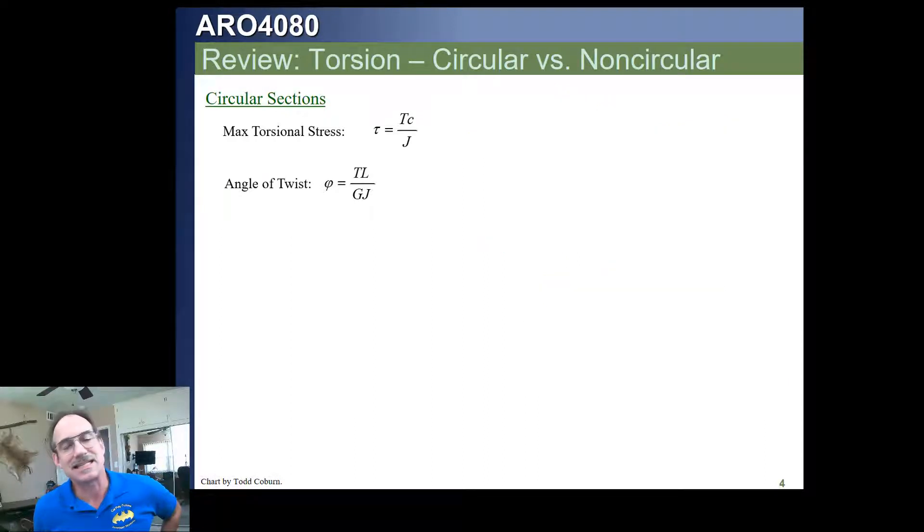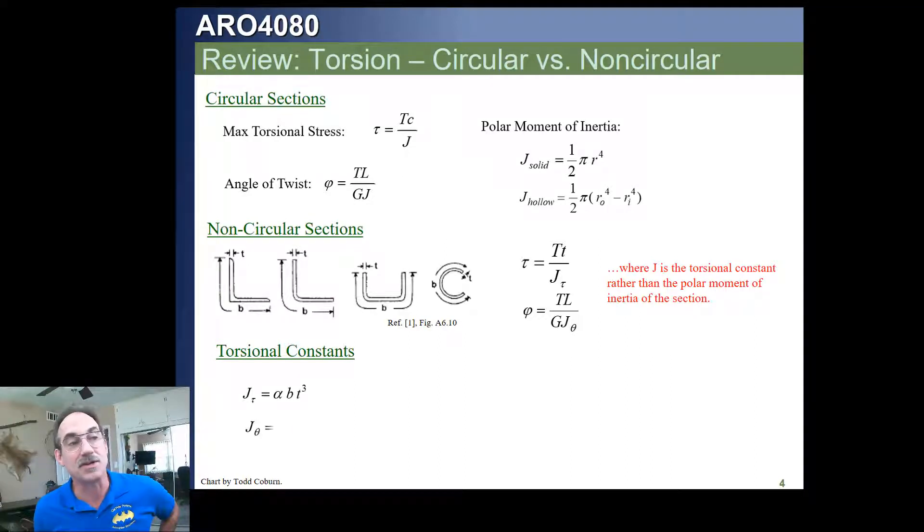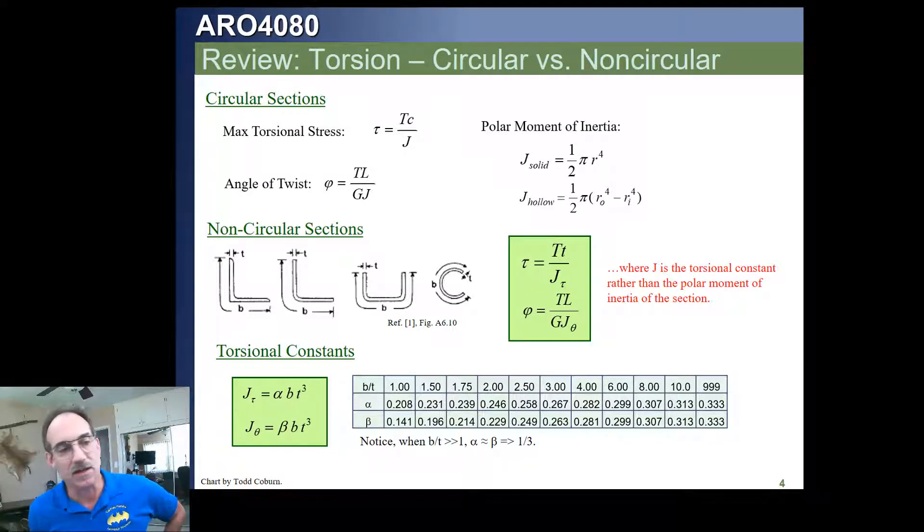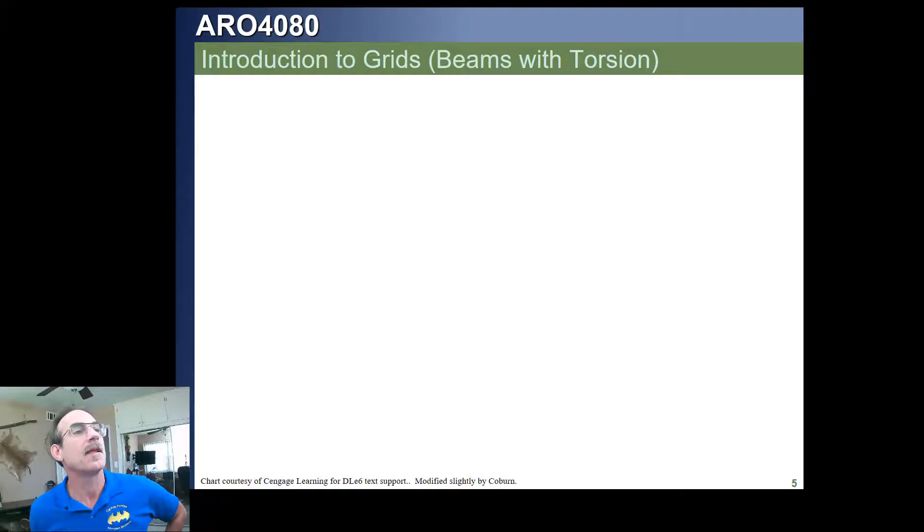Now, with that said, we're going to define this slightly more rigorously. Before we do that, let's refresh our memory on what happens if we have a non-circular section. For a circular section, our torsional constant J happens to be our polar moment of inertia. If we have a non-circular section, we have almost the same form of the equation. We have TT over J for our stresses and TL over GJ for our rotations. In this case, our torsional constant may be different that resists torsional stress versus what resists torsional rotation. Our torsional constants are simply the summation of the alpha BT cubes, or the beta BT cubes, and those can be calculated this way. And you've got a little table in your handbook.